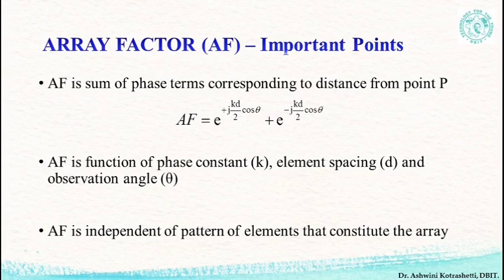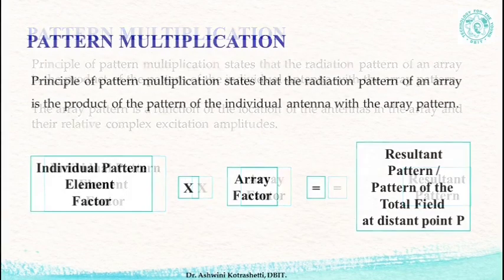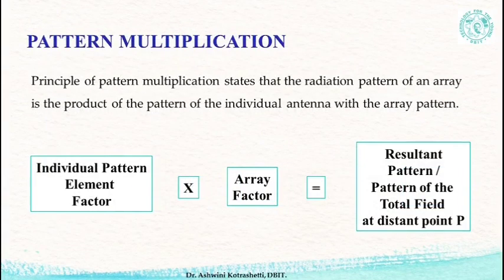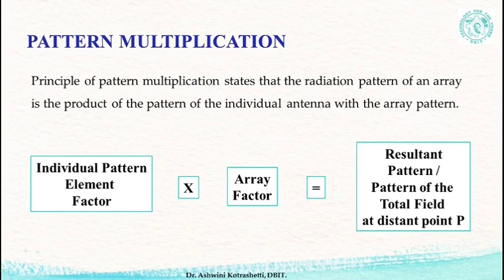The array factor is separable from the total field expression. Having understood this, we now know that the total pattern due to the array configuration at a distant point P is the multiplication or product of the array factor and the field produced by the constituent element. This property is called pattern multiplication.